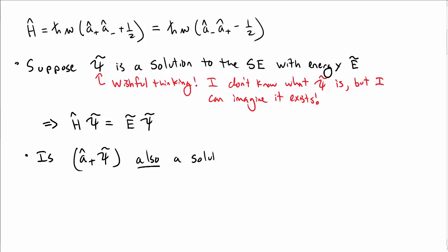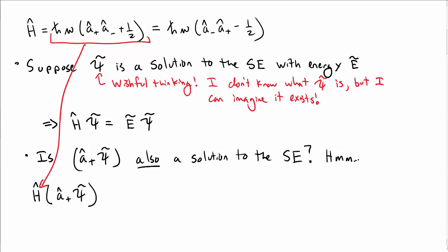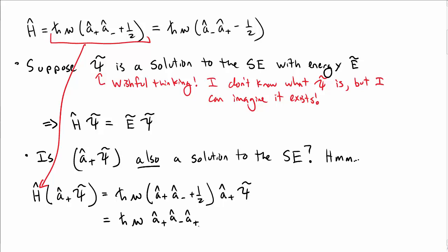So Ĥψ̃ = Ẽψ̃ — that's what we mean by it being a solution to Schrödinger's equation with a particular energy; it's an eigenfunction of the Hamiltonian operator. So is â₊ψ̃ also a solution? Let's take Ĥ(â₊ψ̃). The Hamiltonian is ℏω(â₊â₋ + 1/2), so we insert it and get ℏω â₊â₋â₊ψ̃ + (1/2)ℏω â₊ψ̃.